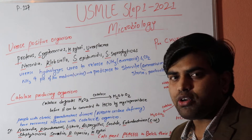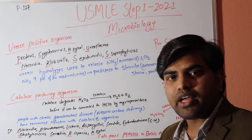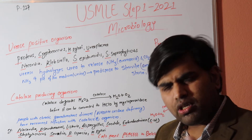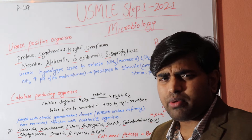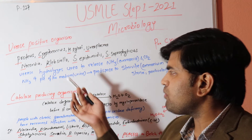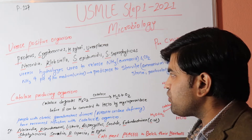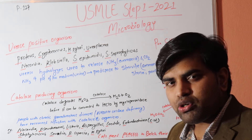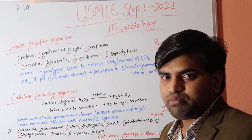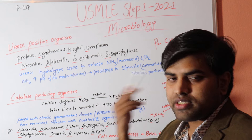Proteus and Klebsiella are responsible for hospital-acquired infections and are the most commonly isolated gram-negative organisms in labs across Asia and worldwide. They can cause various infections including Klebsiella pneumonia, and they are urease-positive organisms.